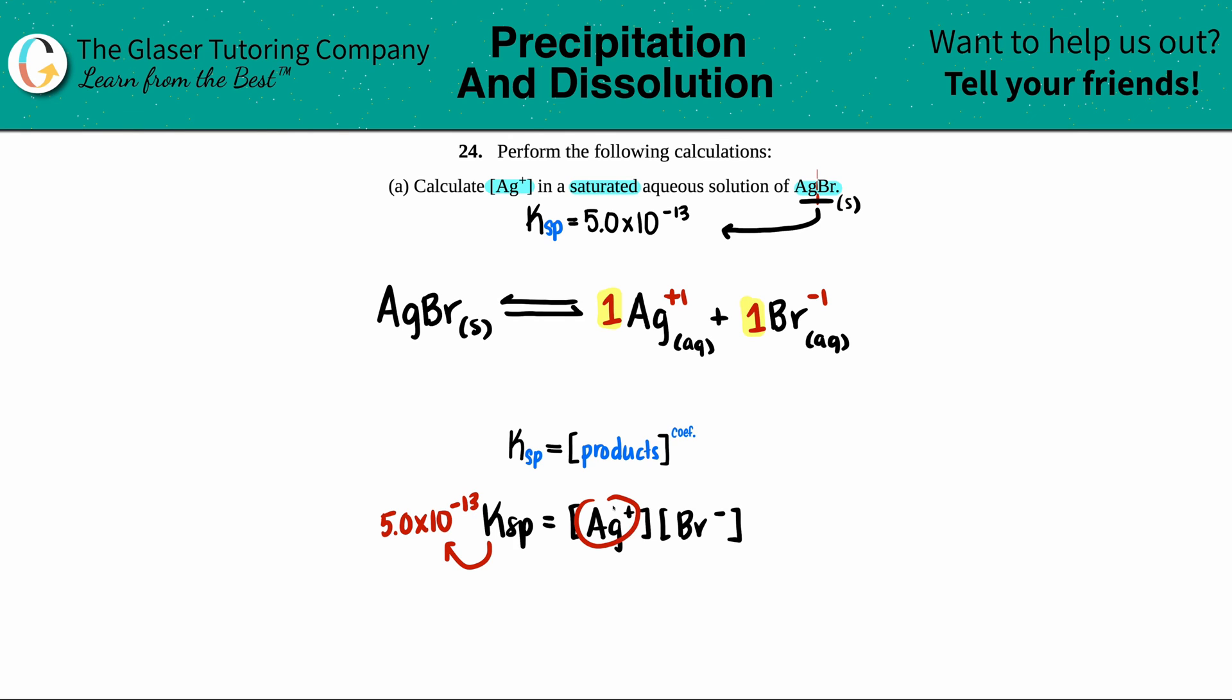The Ksp value is 5.0 × 10^-13. But I don't know what these concentrations are. So we just have to use variables. I don't know what I have for Ag+ in my saturated solution. There's no common ions here. So I'm just going to label this as X and it should be corresponding with the coefficient. So this would be 1X,